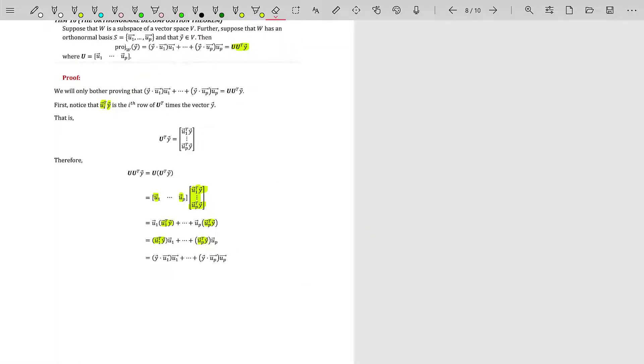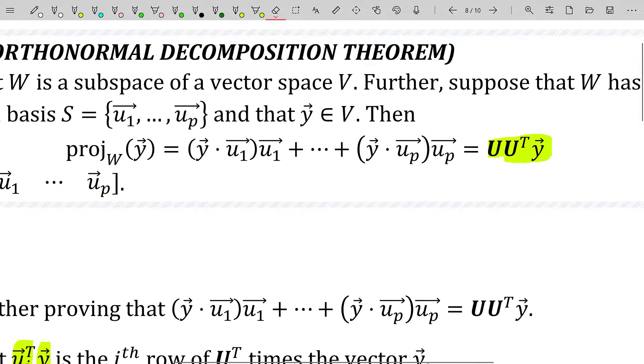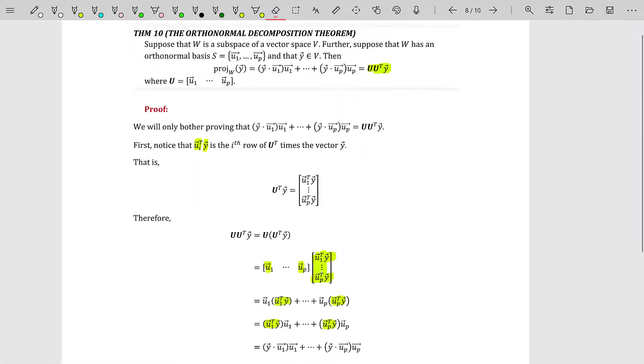And by the way, by definition, u sub 1 transpose times y is actually u sub 1 dotted with y. And that is the same for u sub p transpose times y. It's just u sub p dotted with y. So you could rewrite that last bit as this. And guess what that is? It's where we want to end up. We have now proven that U times U transpose times the vector y is equal to this linear combination right here, which is the projection of y onto the subspace W.